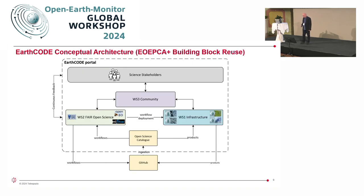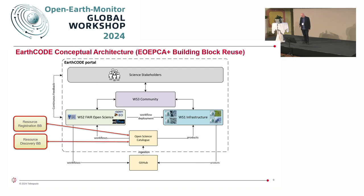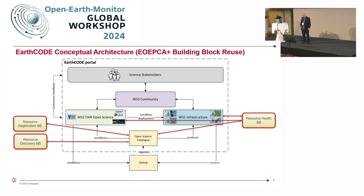EWEPCA+ building blocks will be used within the EarthCode architecture in a number of places. Examples include the use of the resource registration building block within the catalogue to ingest artefacts including STAC items and OGC API records. The discovery building block is used in the open science catalogue to discover ingested artefacts. EWEPCA+ are currently developing a resource health building block to monitor the operational characteristics of the platforms — confirming availability and that workflow capabilities are operating correctly. There is also a data access building block used to implement the access capability of the open science catalogue and potentially for Workstream 1 infrastructure as well.